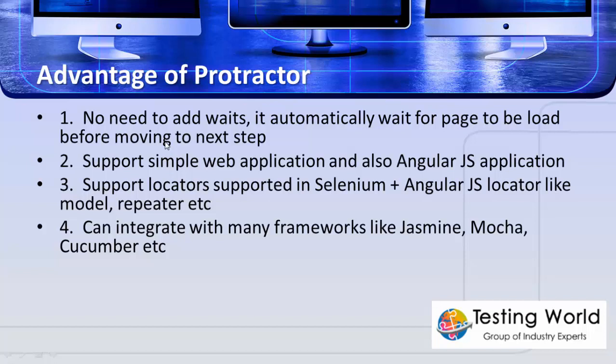The third advantage is that Protractor supports almost all element locators that are supported by Selenium WebDriver, such as id, name, class, XPath, and CSS. Additionally, Protractor supports extra AngularJS-specific locators like model and repeater. So it automates simple web-based applications using standard WebDriver locators, plus extra AngularJS locators. Furthermore, Protractor can integrate with many other frameworks like Jasmine, Mocha, and Cucumber, which are additional advantages of using Protractor.